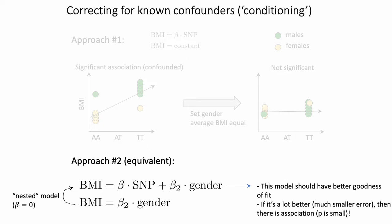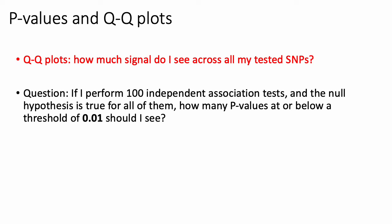If the goodness of fit of model one is much better, the p-value you calculate would be small. In a genome-wide association study, you don't perform just a single association test — you typically test a large panel of markers, anywhere between 600,000 and 5 million SNPs across the genome.